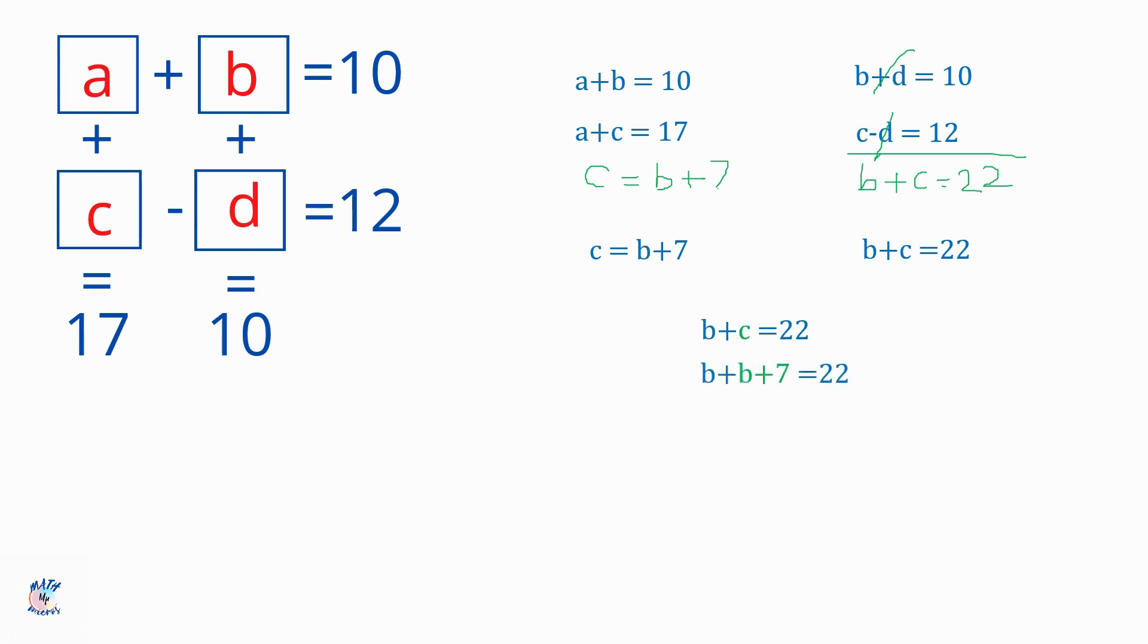So B plus B plus 7 is equal to 22. 2B plus 7 is equal to 22, and 2B is 22 minus 7, which is 15. And hence B will be 15 by 2, which is 7.5. And now we know B is 7.5.